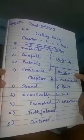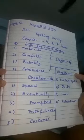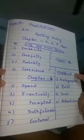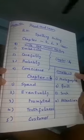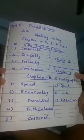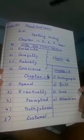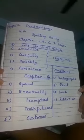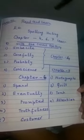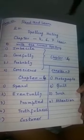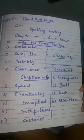From chapter 6: spent, eventually, prompted, truthfulness, customer. From chapter 7: photographs, quilt, charge, attention. Learn these spellings by heart.